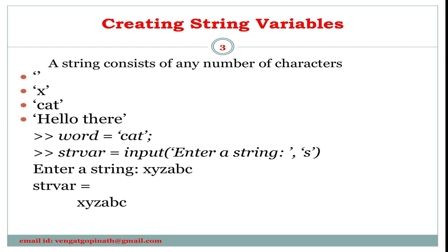White space characters include the space, tab, new line which moves the cursor down to the next line, and carriage return which moves the cursor to the beginning of the current line. Leading blanks are blank spaces at the beginning of a string — for example, a string starting with empty spaces before 'hello' is considered to have a leading space. Trailing blanks are blank spaces at the end of a string.